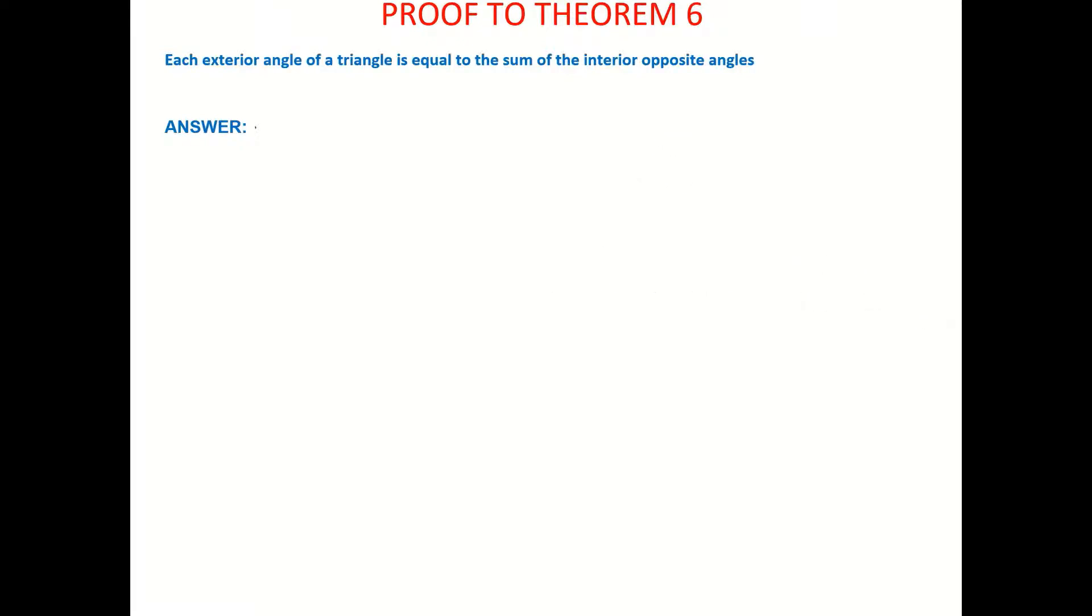So first of all, we're going to do, as per previous theorems, we're going to write down what we're given. And what we are given is the triangle ABC. And I'm going to have that exterior angle here as well. So that's what we're given.